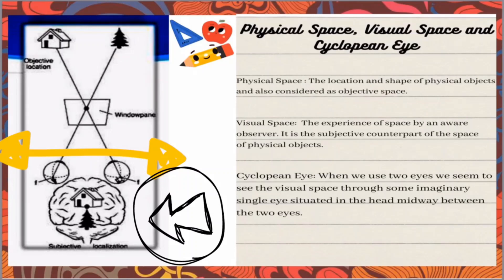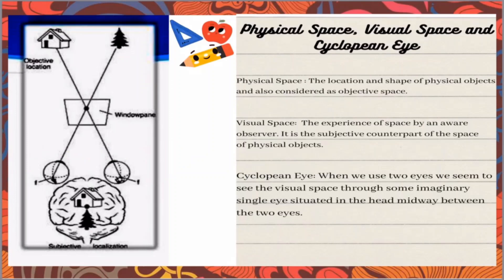Cyclopean eye: when we use two eyes we seem to see the visual space through some imaginary single eye situated in the head midway between the two eyes. The cyclopean eye ka concept ye hai ki aisa maana jata hai ki hamaari dononon aankho ke beech ek aisi aank aur present hai jahan image ka formation hota hai aur jahan par single image bendi hai. Basically, cyclopean eye imaginary hota hai, aisi koi eye exist nahin karthi in reality.